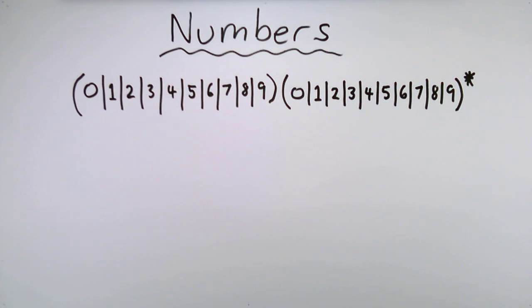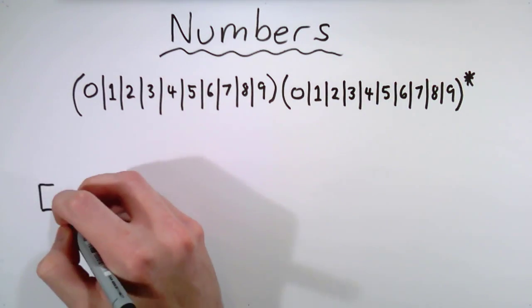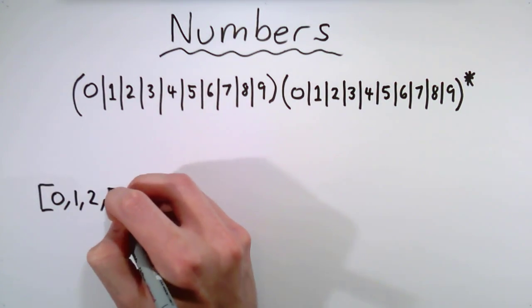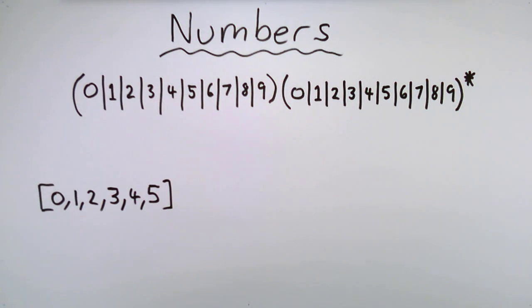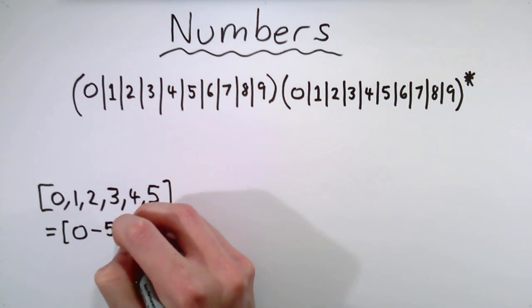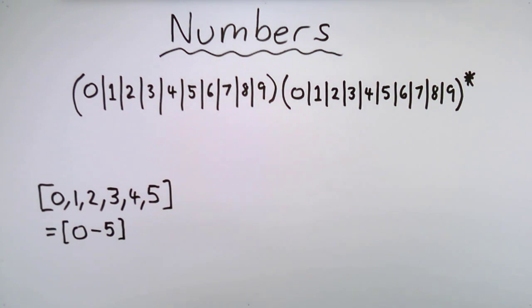Now this is far too long for a busy computer scientist. Thankfully, we can use some extended regex syntax to describe this and others using only a few symbols. In many systems, a list of symbols between square brackets like bracket zero, one, two, three, four, five bracket means choose one from this list, and we can shorten this further to bracket zero dash five bracket, which means choose any symbol in the range zero to five.